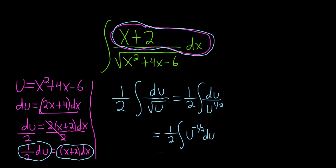And so now we're finally at a point where we can use the power rule. The power rule says that we add 1 to the exponent and divide by the results. So this is 1 half. Adding 1 to the exponent is going to give us 1 half.